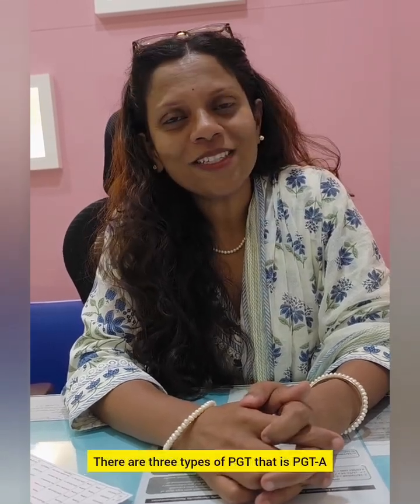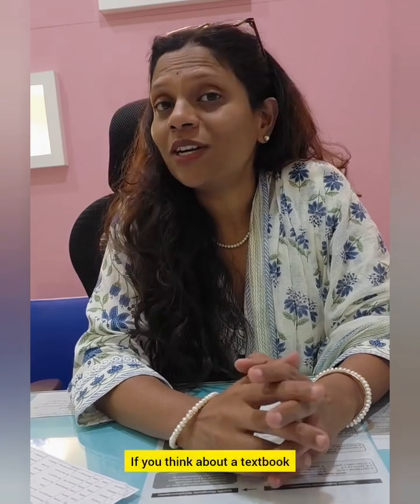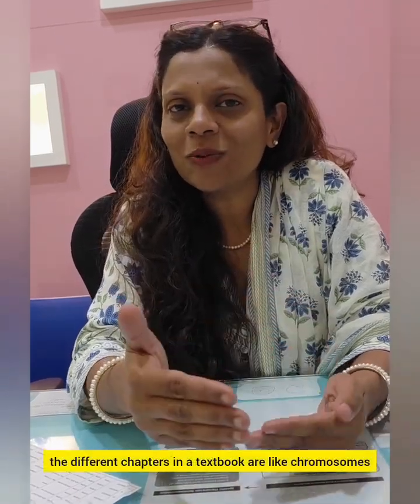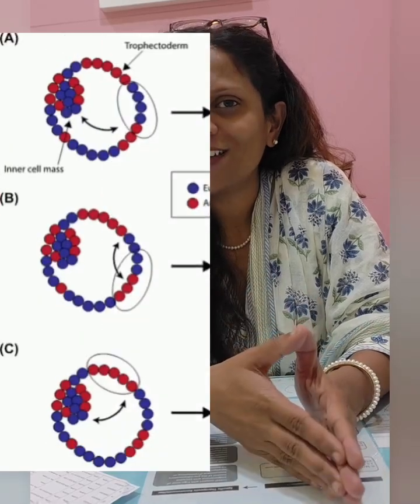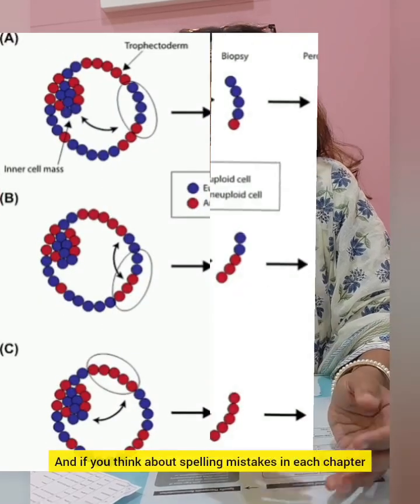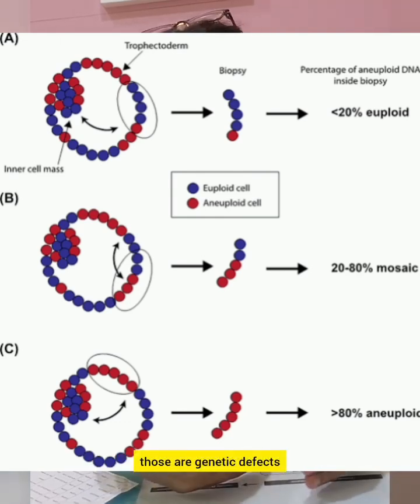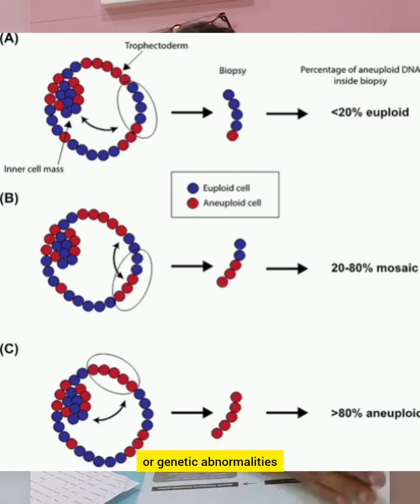There are three types of PGT: PGT-A, PGT-M, and PGT-SR. PGT-A is for aneuploidy. If you think about a textbook, the different chapters in a textbook are like chromosomes, and if you think about spelling mistakes in each chapter, those are genetic defects or genetic abnormalities.